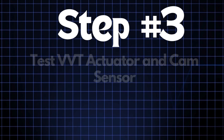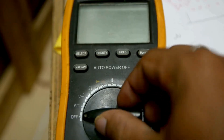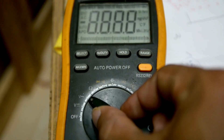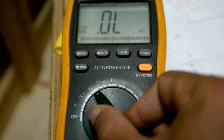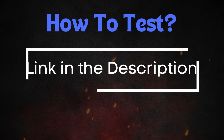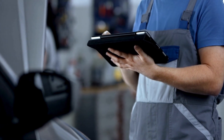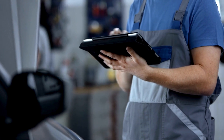Step 3: test the VVT actuator and cam sensors. You can test the VVT actuator and cam sensors using a multimeter. The process can vary depending on the type of cam sensor you have — if your vehicle uses a hall effect sensor, the testing method will differ from that of a permanent magnetic sensor. To learn more about testing the VVT actuator and cam sensors, check out our detailed video on this topic.